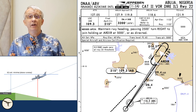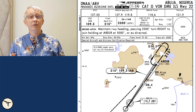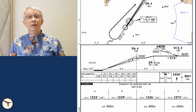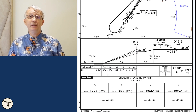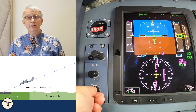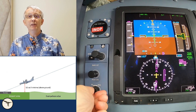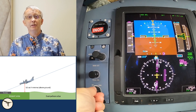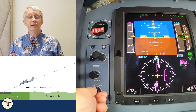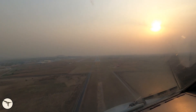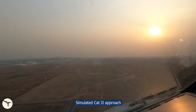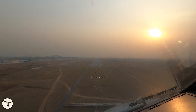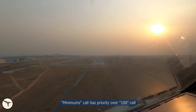Now let's have a look at the ILS CAT-2 approach for the same runway. The minima is 1239 feet, which corresponds with a decision height of 117 feet. In this case, the radio altimeter will trigger the minimums call when we are inside the airport perimeter. The automatic call-outs will sound like this: [Approaching minimums. 200. Minimum. Minimum.]